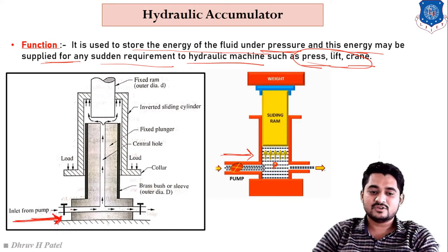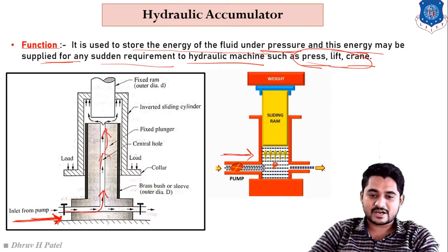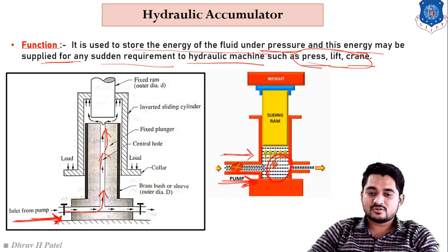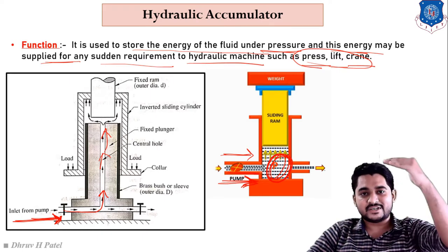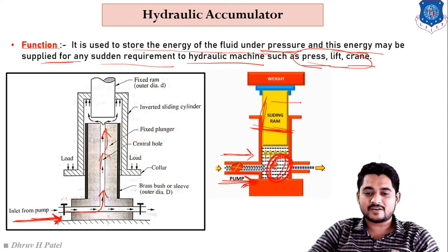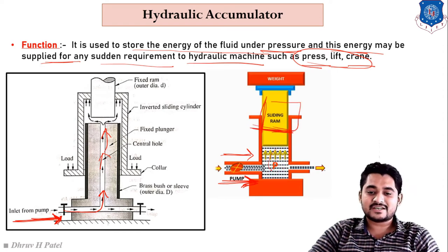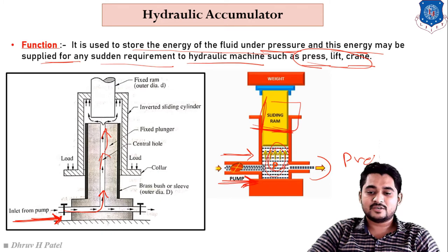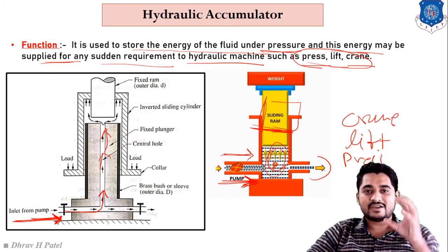When higher-pressure fluid flows into the inlet pipe, the sliding ram moves upward due to that pressure energy. If we want to store this energy, the sliding ram is fixed at the upper side, because a higher amount of pressure energy is stored there. The outlet pipe is connected to the hydraulic press, hydraulic lift, or hydraulic crane.